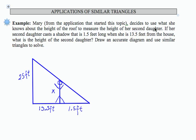So Mary had two daughters, and she initially measured the height of her house using her first daughter. Her second daughter now is standing next to the house, 13.5 feet away, and she casts a shadow that's 1.5 feet tall.